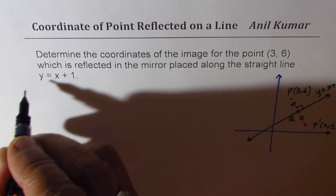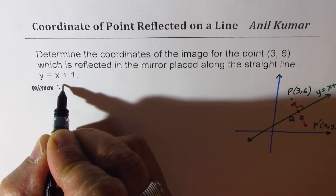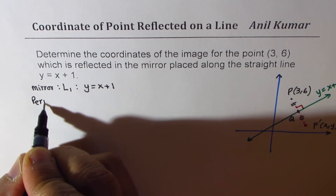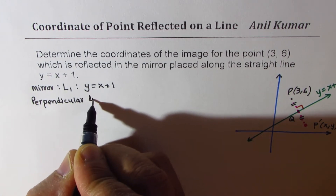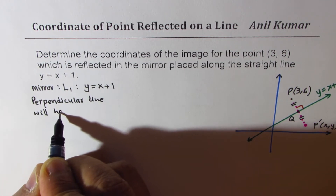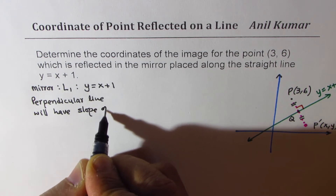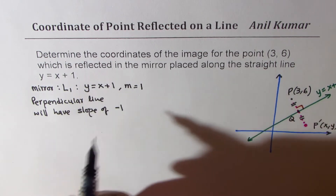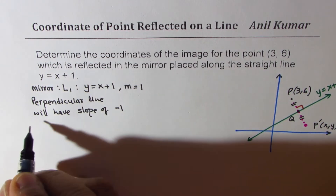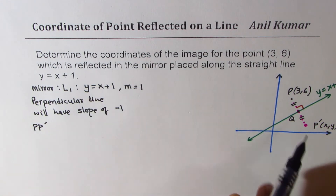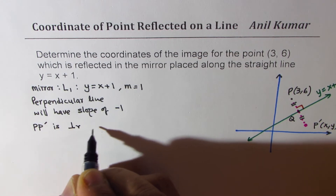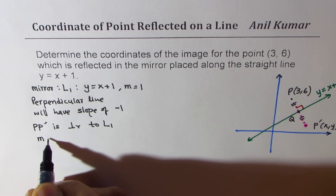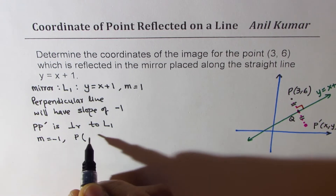We are given the equation of the mirror line: y = x + 1. Now, the perpendicular line will have a slope of minus one, since the slope of the mirror line is 1 and a perpendicular line has a negative reciprocal slope. So the line PP' is perpendicular to line L1, with slope m = −1, and we know it passes through point P = (3, 6).